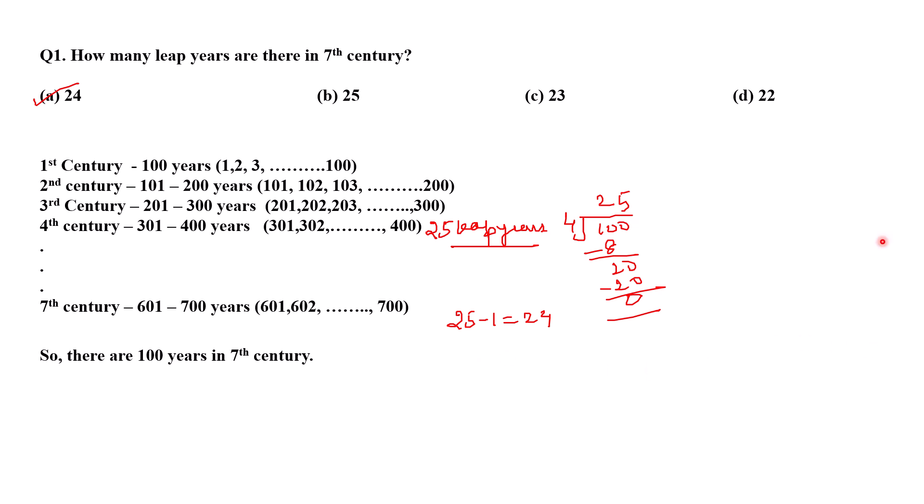And please remember century years will be a leap year if it is completely divisible by 400, otherwise it will be a normal year. Question number 2: The calendar for the year 2007 is same for the year - 2014, 16, 17, 18. These are the 4 options. Now how to find that the calendar for the year this will be same for which year. For that what is the rule.